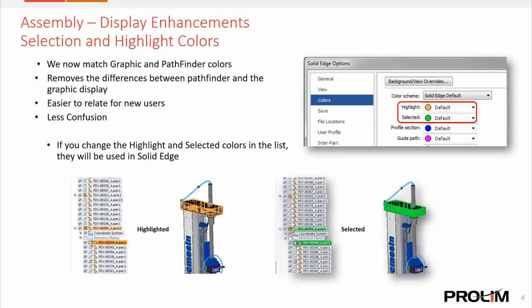Some display enhancements were made in Solid Edge 2019 in the assembly environment. We can now match the graphic and Pathfinder colors — whatever color a part highlights in the model, it'll also highlight that same color in the Pathfinder. Whatever color is set for the selected option when you click on a part in the assembly, it'll highlight that same color in the Pathfinder as well. So you may see things highlighting as green now instead of orange. A nice little enhancement that should clear up confusion and make it easier to see what you're highlighting versus what you're selecting.